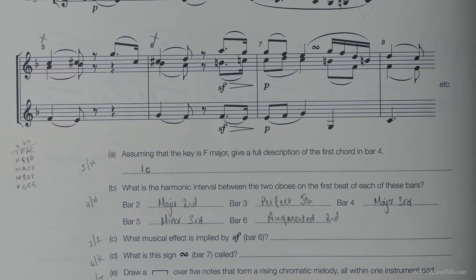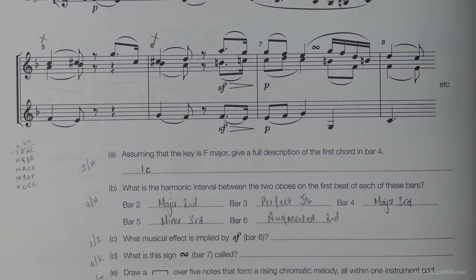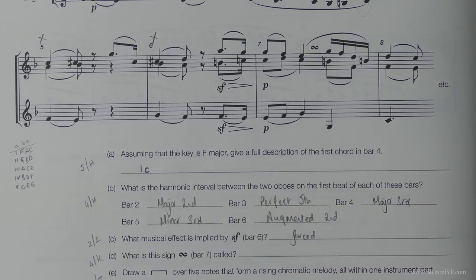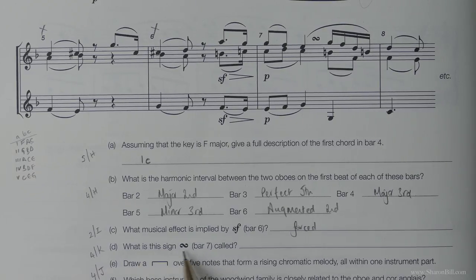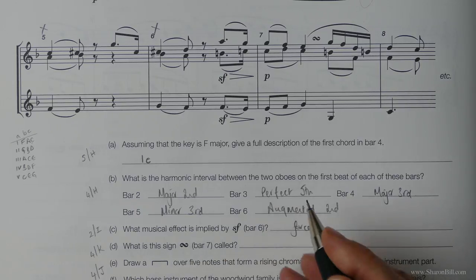So what is the musical effect SF? And we first discovered in grade 2 that that means forced. In grade 4 we learnt to describe this symbol here as a turn. Where we weave around the note.